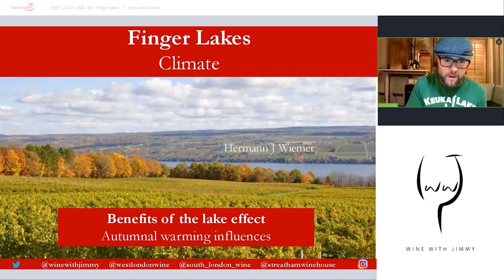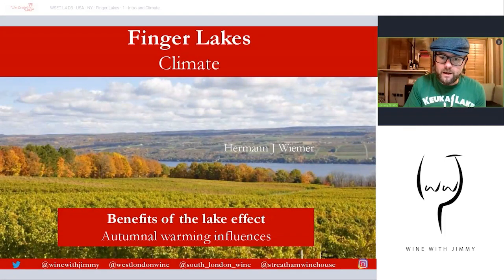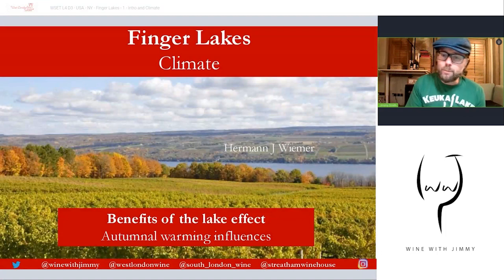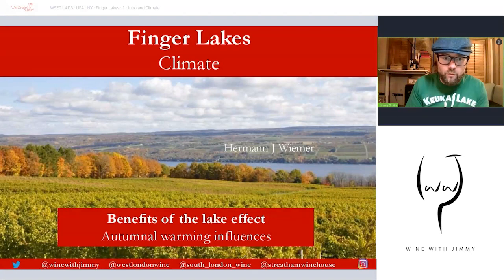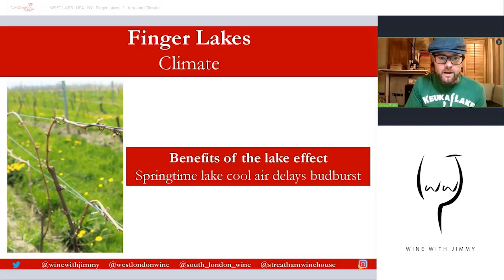Another key benefit is the warming influence the lakes provide in autumn. The heat stored in the large volume of deep water during summer is released slowly, enabling grapes to ripen over a longer period and reducing the risk of autumnal frosts that could be very detrimental to yields. Here you can see an autumnal photograph of Hermann J. Wiemer's vineyard, with tree leaves turning wonderful shades of orange, red, and brown.